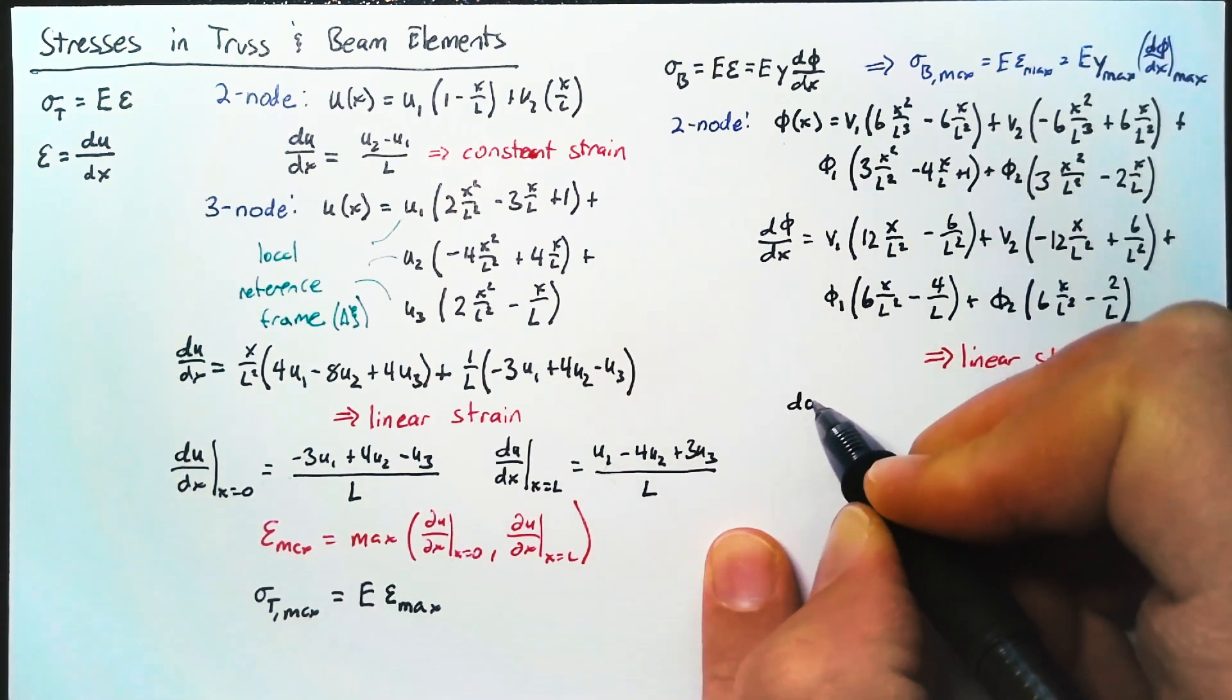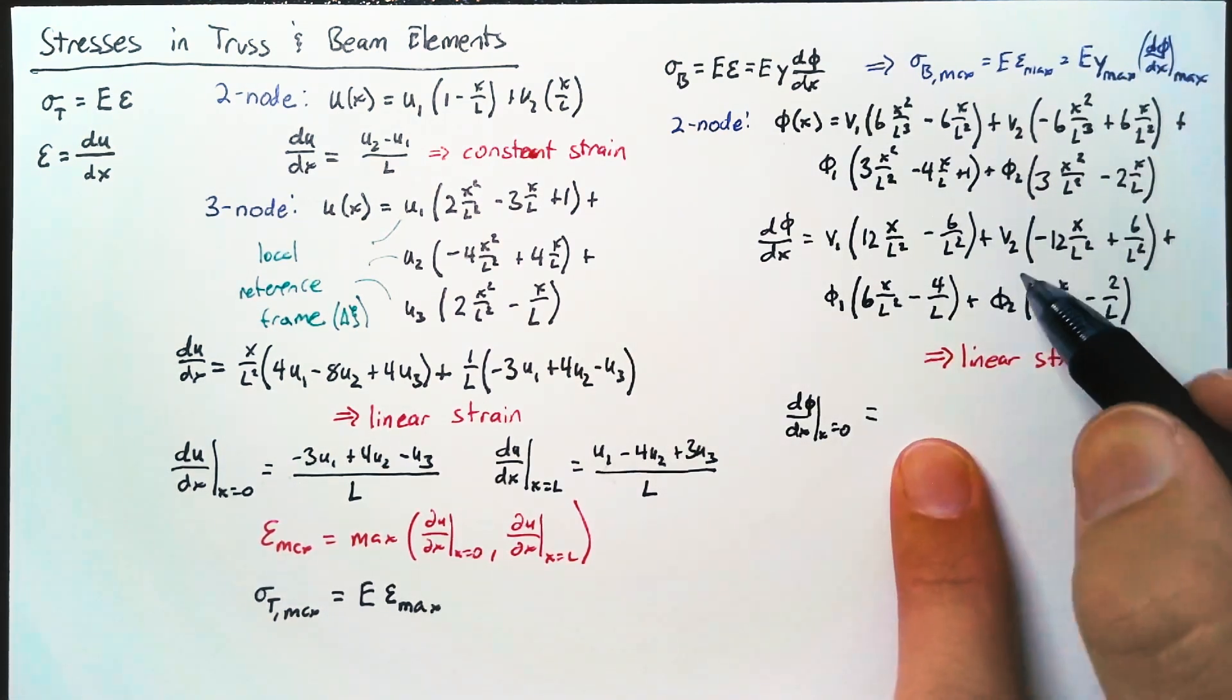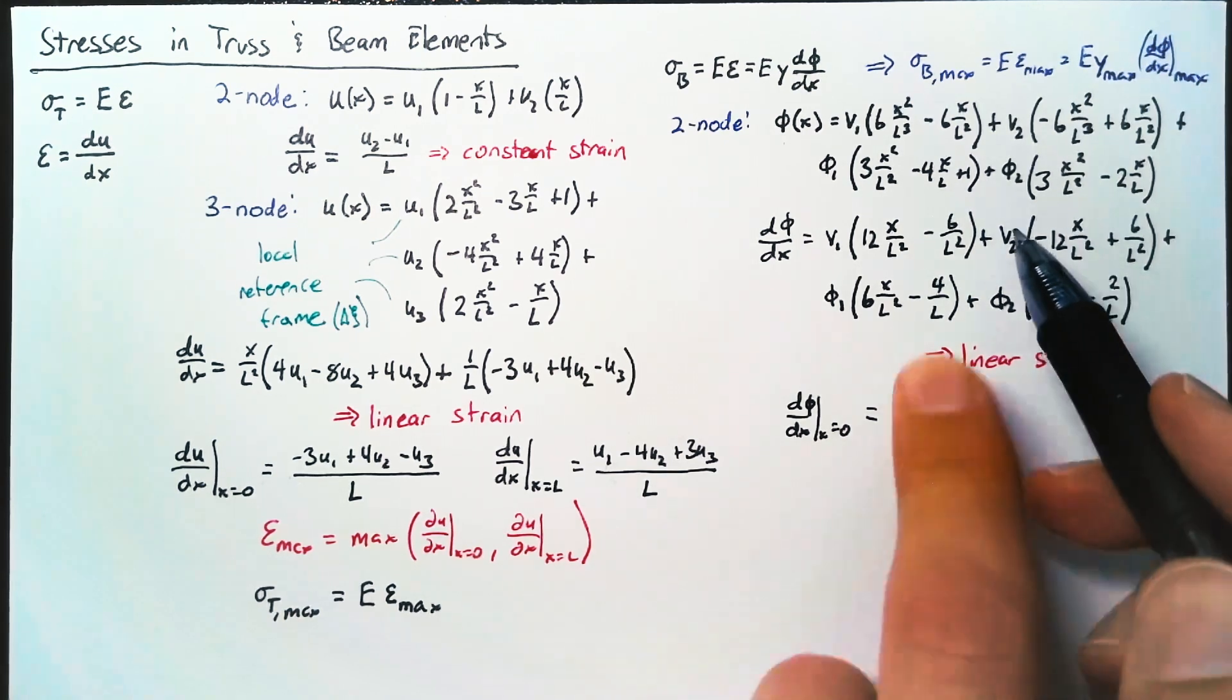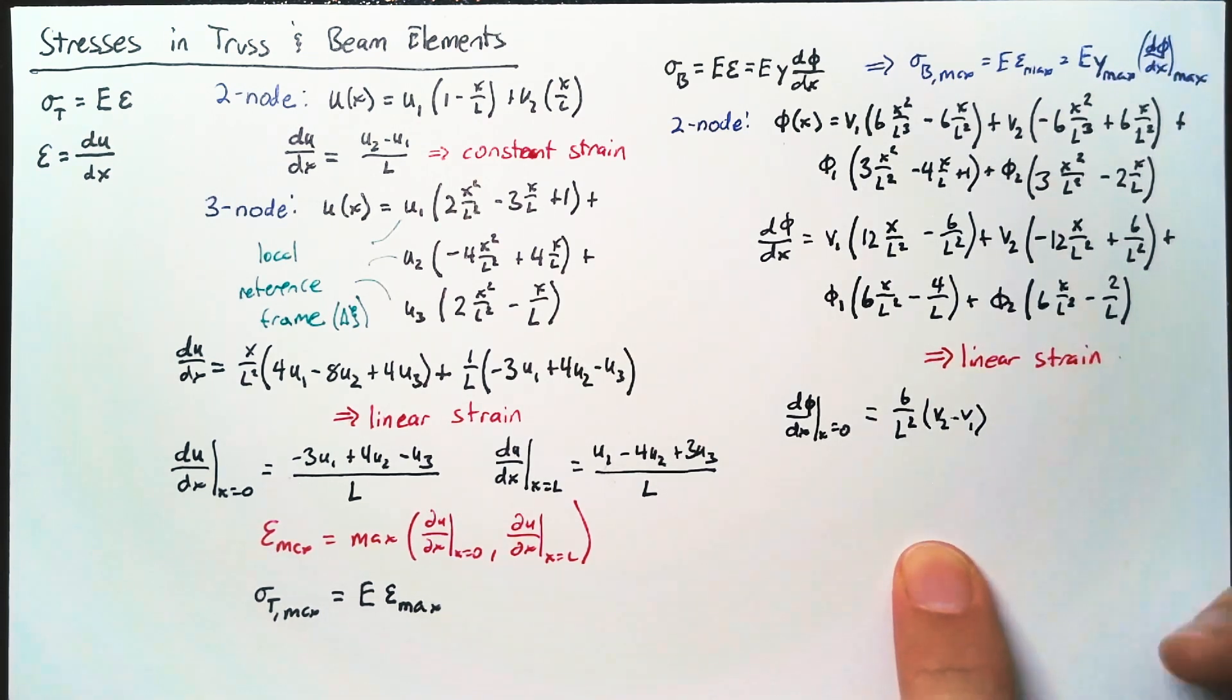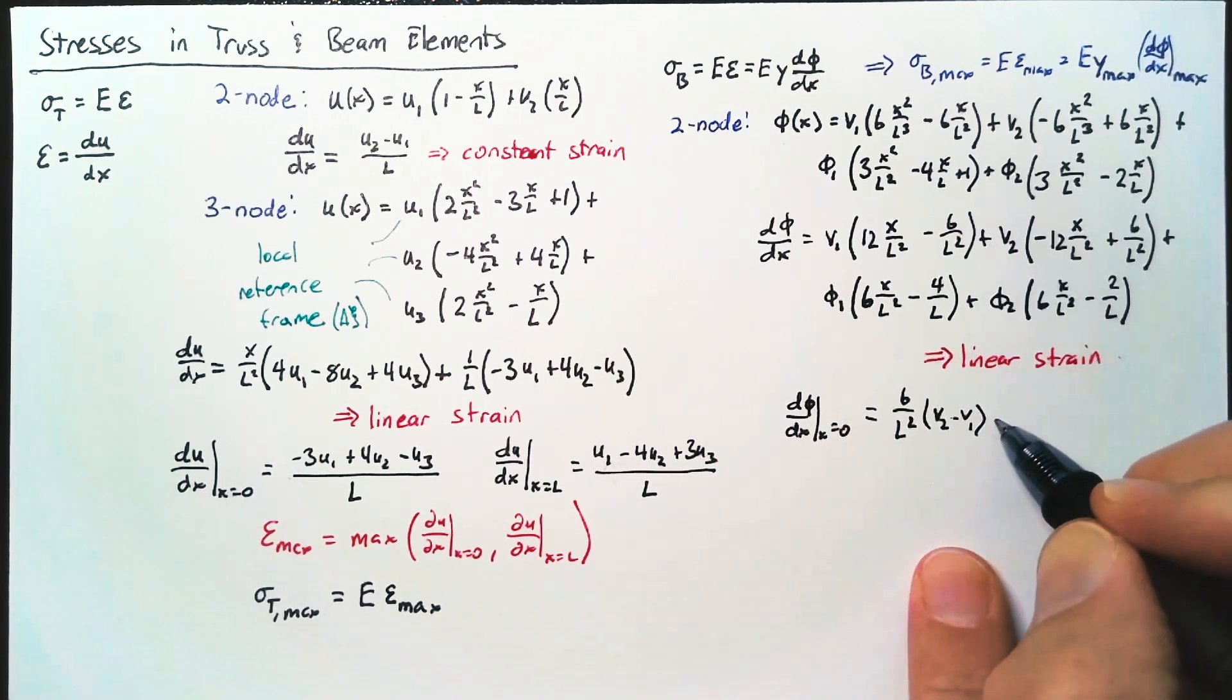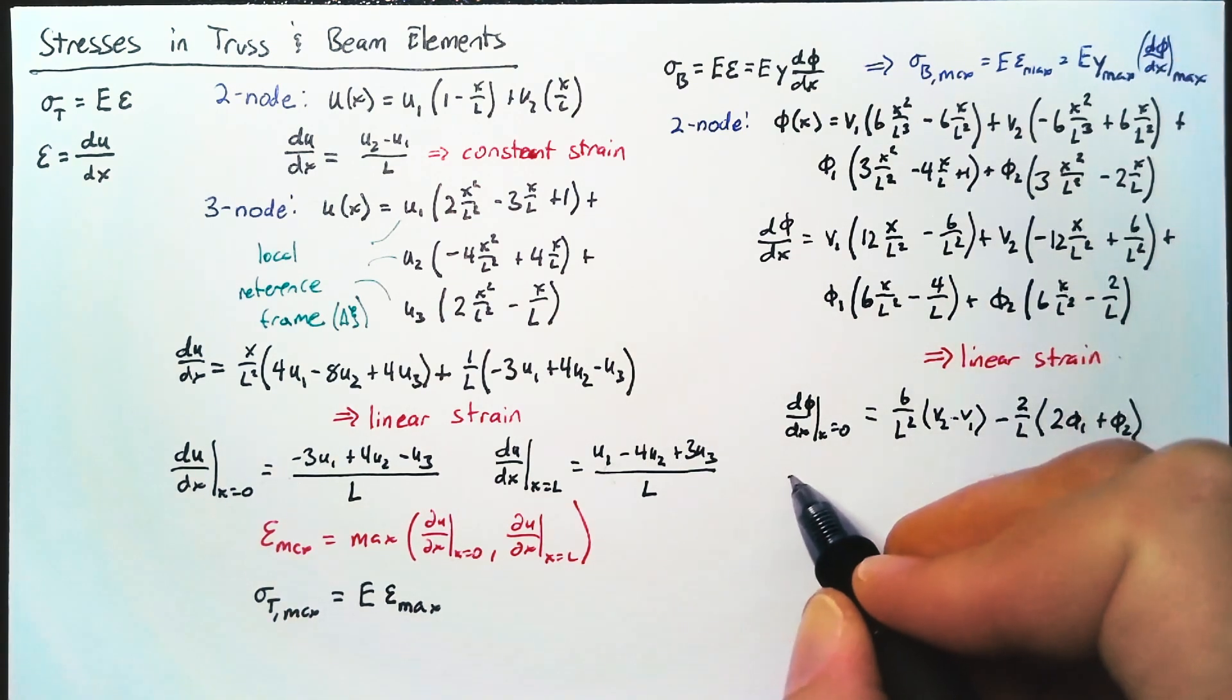So the final process here is just to evaluate d phi dx at x equals zero, which is just going to be 6 over L squared. So taking out this piece and this piece, and that'll end up being V2 minus V1. And then we have our 2 over L and 4 over L. So we'll take out the 2 over L and end up with 2 phi1 plus phi2.